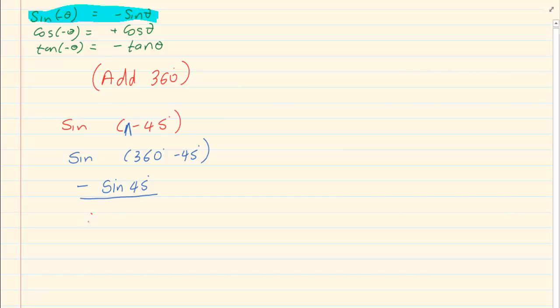Let's do a reduction of cos negative 30. Now if I simply add my 360, I'm going to have cos 360 minus 30, doing a reduction, it's in the fourth quadrant. So it's positive cos 30.